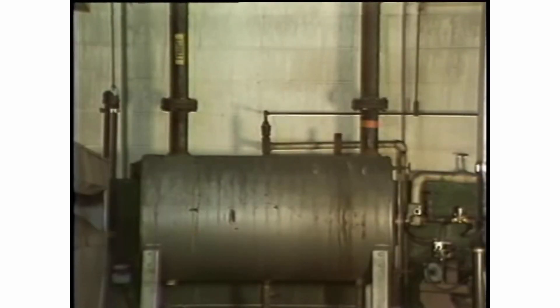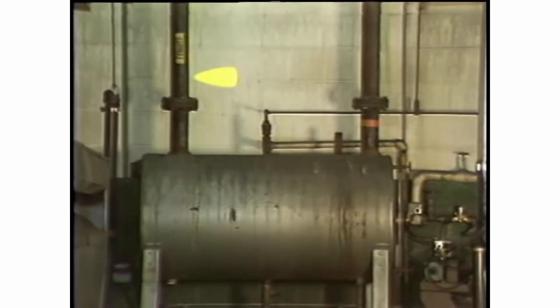Condensate receivers and their vents must be properly sized to minimize back pressure in the system. The vents should be the same size or one size larger than the condensate line into the receiver. Condensate pumps must have the correct NPSH to ensure the efficient return of hot condensate to the boiler.